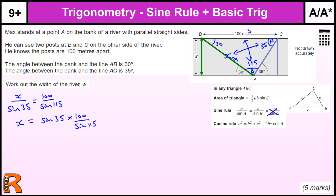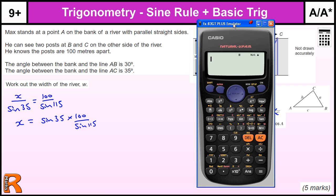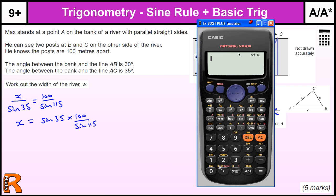Let's get the calculator. Where have this gone? Where is he? There he is. Bring him in. Make sure you're in degrees mode. Sine 35, times by 100,